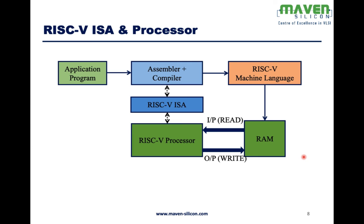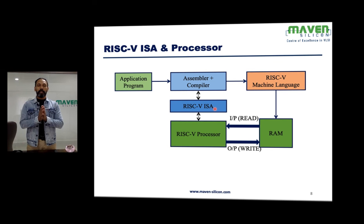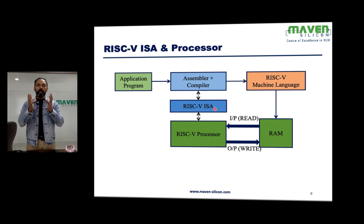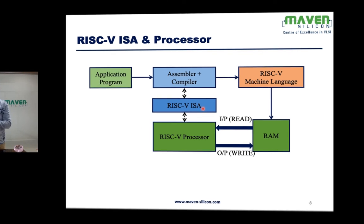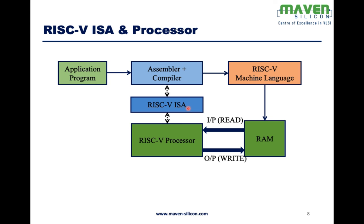RISC-V ISA is an abstract interface between low-level software and hardware. When I say low-level software, that's nothing but the compiler and assembler; when I say hardware, that's the processor. So basically RISC-V ISA is a golden reference for both the embedded systems engineer and the VLSI engineer. The embedded systems engineer refers to RISC-V ISA and based on the specification designs the compiler, which should support all instructions and convert any high-level language into RISC-V assembly language. The VLSI engineer also uses RISC-V ISA as a golden reference and implements the RTL design of the RISC-V processor.